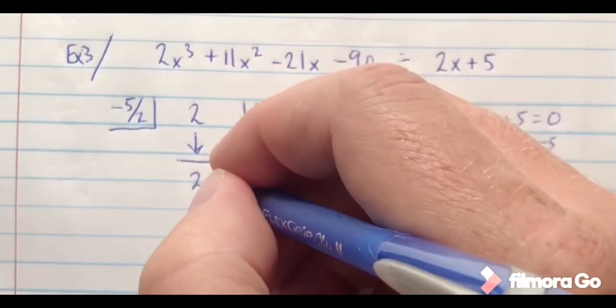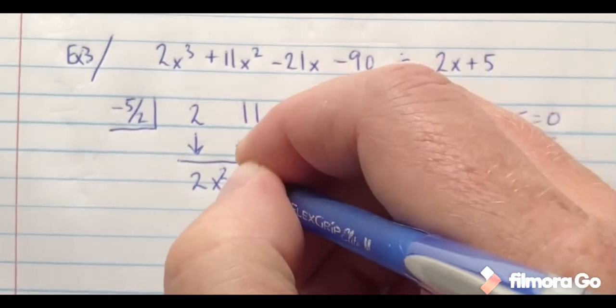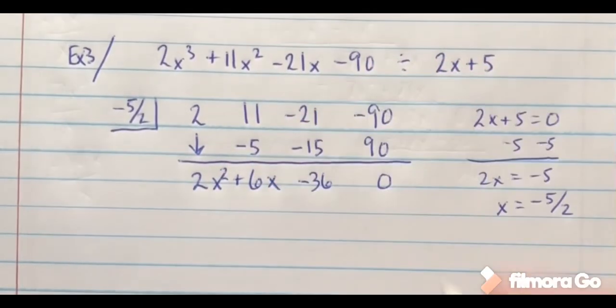So notice what that leaves me left with now. This becomes 2x squared plus 6x minus 36.